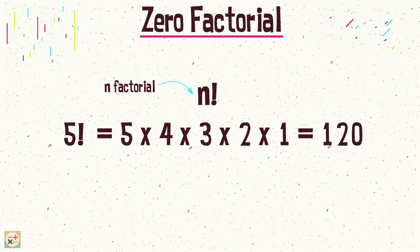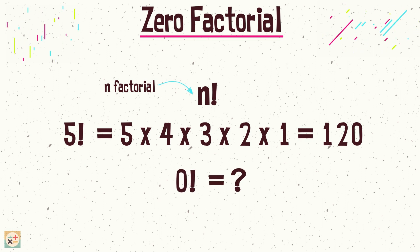Now let's talk about zero factorial. Surprisingly, its value is equal to 1. But how can this be if we are not multiplying any numbers together?